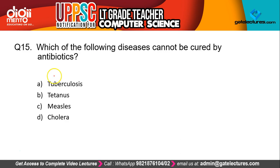Question 15 asks: which of the following diseases cannot be cured by antibiotics? The correct answer is C — measles, called khasra in Hindi. This is because measles is a viral disease.